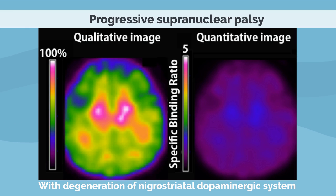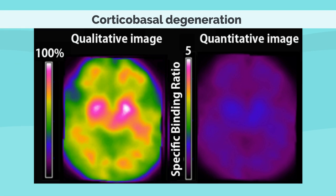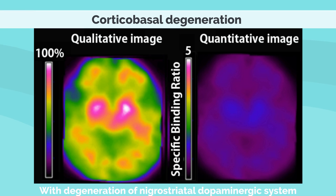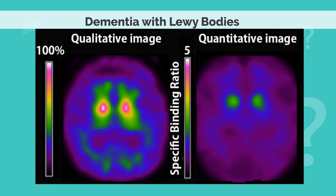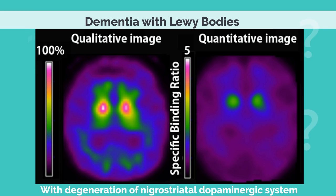In progressive supranuclear palsy, quantitative imaging shows a large decrease in specific binding ratios. In corticobasal degeneration, there is a left-right difference in striatal accumulation, with quantitative imaging again showing a large decrease. Quantitative images are particularly helpful in the diagnosis of dementia with Lewy bodies, as striatal accumulation tends to be generally decreased with little left-right difference.